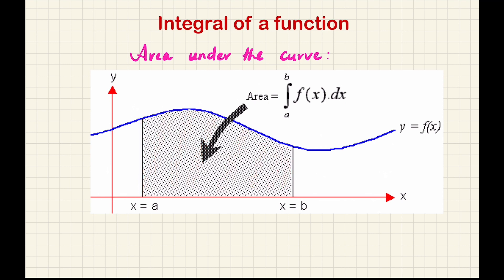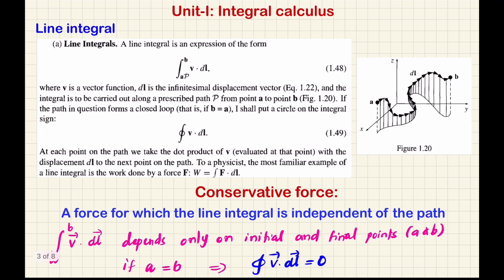This is the basic physical meaning of the integral of a function. Now we are moving on to the line integral. Line integral is defined like this: you have the integral of a vector function — v is a vector function, and dl is the infinitesimal displacement vector. The integral is defined over a path which defines the path of the integral, so you have to integrate over a certain path.